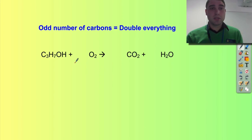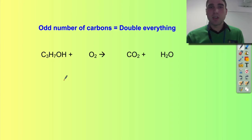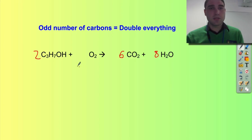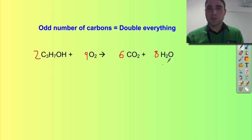Let's do one last example: propanol, propan-1-ol, C3H7OH. It doesn't really matter if it's propan-1-ol or propan-2-ol — you'll still get the same ratio in the end. We've got an odd number here — three carbons — so I'm going to double. Two times three is six, so I'm going to have six carbon dioxides. How many hydrogens? I've got sixteen total, so I'm going to need eight water molecules. Six times two is twelve from CO2, plus eight from water is twenty oxygens on the products side. We've already got two oxygens from the two propanol molecules, so I'm going to need nine oxygen molecules. Checking: two plus eighteen is twenty, and twelve plus eight is twenty — balanced.